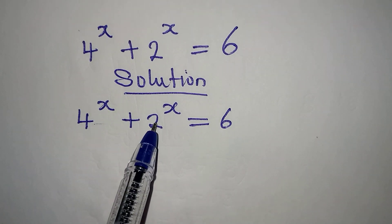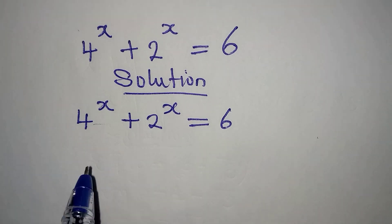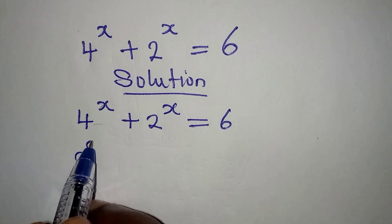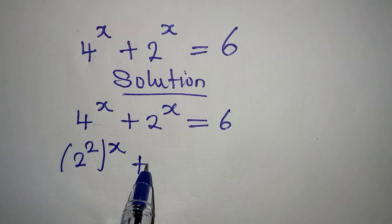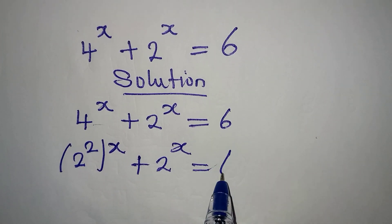So let's provide the solution to this problem, showing all the steps. From here, 4 is 2 to the power of 2. Then x will still come. Then plus 2 to the power of x equal to 6.